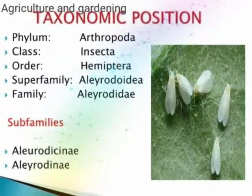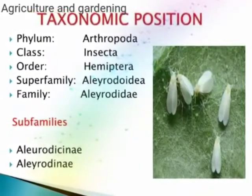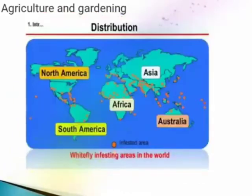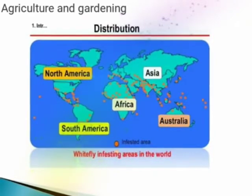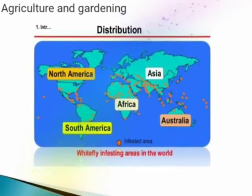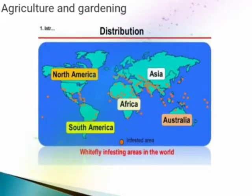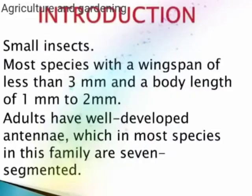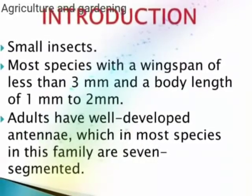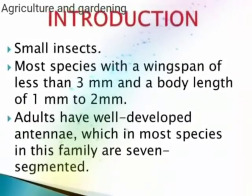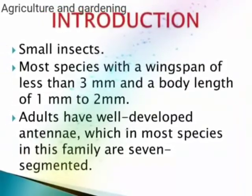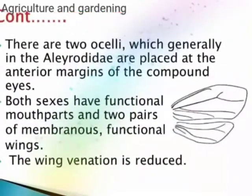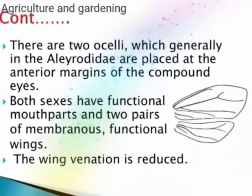The taxonomy of whiteflies: the phylum is Arthropoda, class Insecta, order Hemiptera, sub-family Tropida. The distribution of whitefly is mostly in North America, Asia, Africa, Australia, and South America. Whiteflies are small insects with more species, with wings of less than three millimeters and body length of one millimeter.